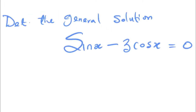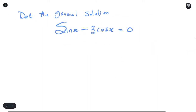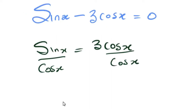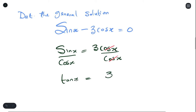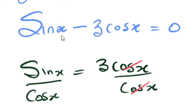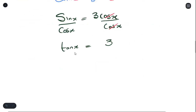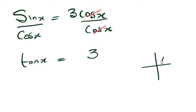This question says: determine the general solution of sinx − 3cosx = 0. First, move cos to the other side. Then, divide both sides by cos — on the left hand side this produces tan, and on the right hand side the cos cancels out. We can do this because the angle after sine and after cos are both x. Since we have positive 3, tan is positive, which occurs in the first and third quadrants.